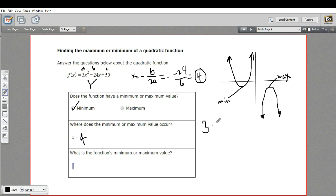3 times, well, 4 squared is 16, minus 24 times 4, plus 50. And when you do all of this calculation, you're going to end up with 2.